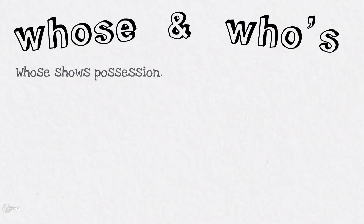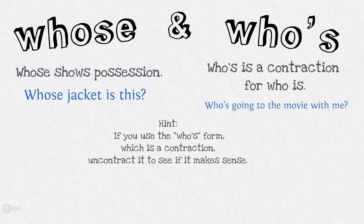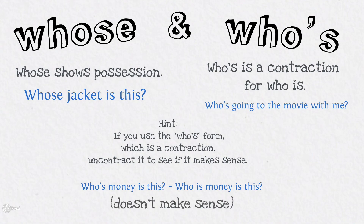Whose and who's. Whose shows possession: 'Whose jacket is this?' Who's is a contraction for 'who is': 'Who's going to the movie with me?' If you use the who's form, uncontract it to see if it makes sense. 'Who is money is this?' — it just doesn't make sense, so use whose instead.